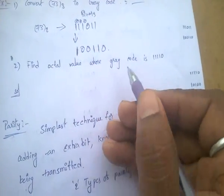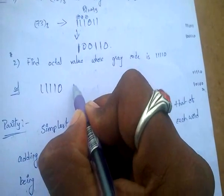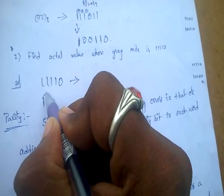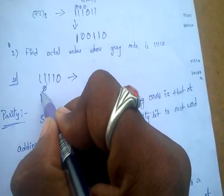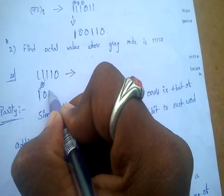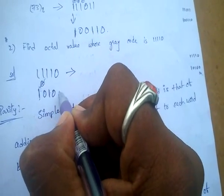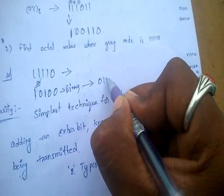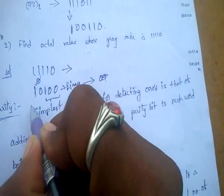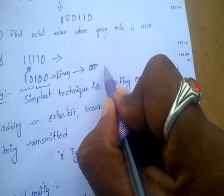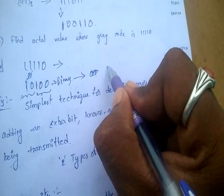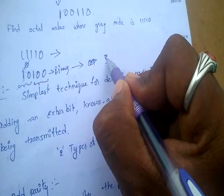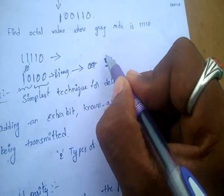Find the actual binary value whose gray code is 1110410. For this, find the binary: the first digit is same. Then find exclusive-OR between adjacent bits: 1 XOR 1 gives 0; 0 XOR 1 gives 1; 1 XOR 1 gives 0; 0 XOR 0 gives 0. This is the binary. For octal, make groups of three digits: 010 means 2, 100 means 4. So the octal value is obtained. That is the octal system.